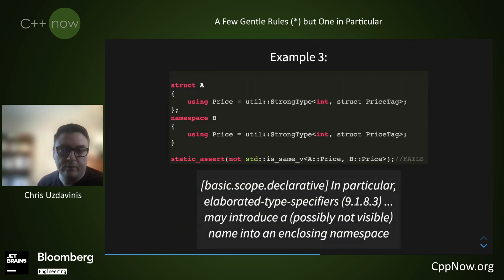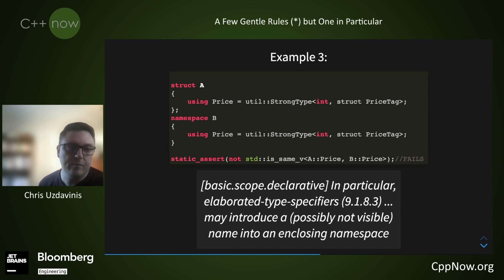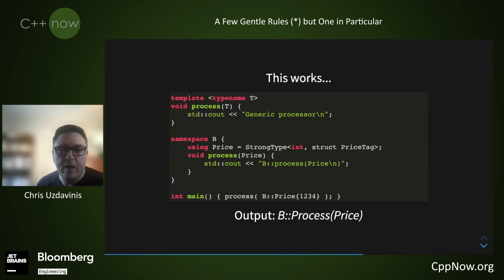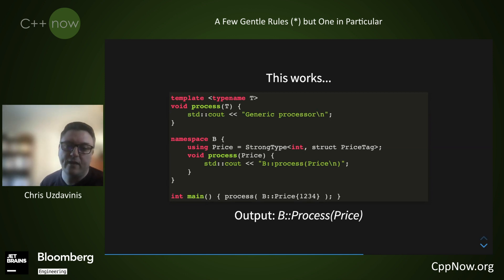Here we have two scopes both declaring strong types for price, however once again they are the same. What's going on? A injects price tag into the global namespace and B finds that injected name and reuses it. So here main calls process passing a price from namespace B. Since price names a type connected to namespace B through the price tag, and template arguments affect ADL, the unqualified call to process selects the one in namespace B as it's a perfect match.